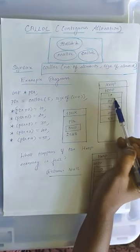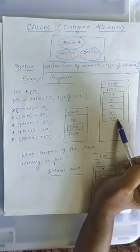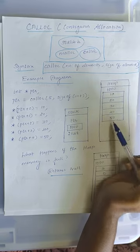Similarly, 20, 30, 40 and 50 are stored in 2nd, 3rd, 4th and 5th positions.